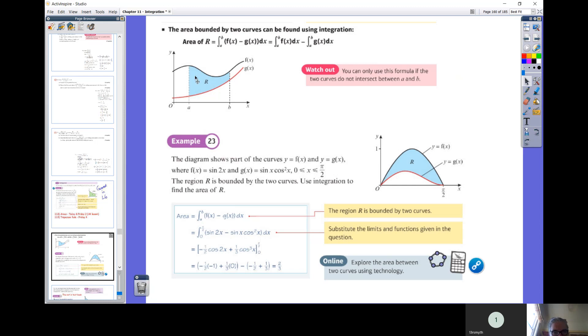Okay, because obviously the area under the higher one would be all of this section here. And then if you then take away the area under the g function, you're just left with the area there. So it'd be f of x, then subtract away g of x. So that's example 23.